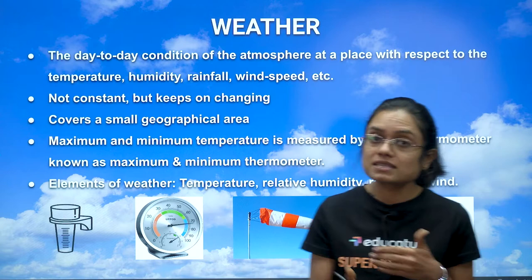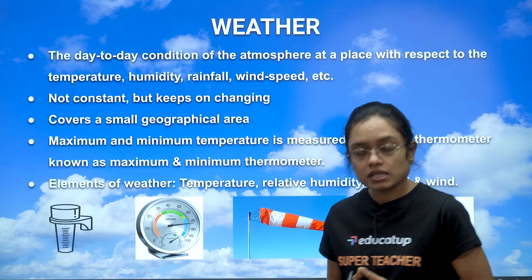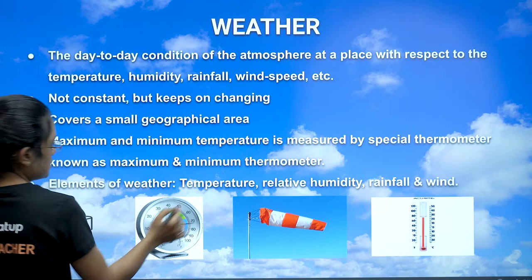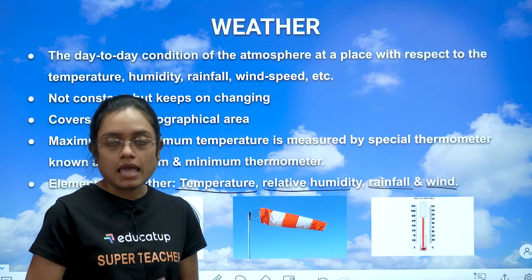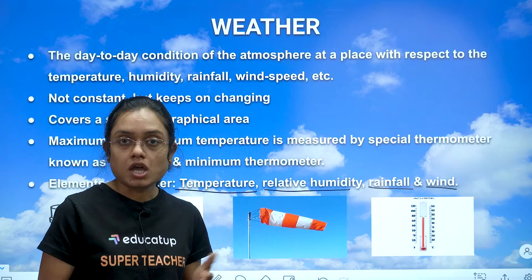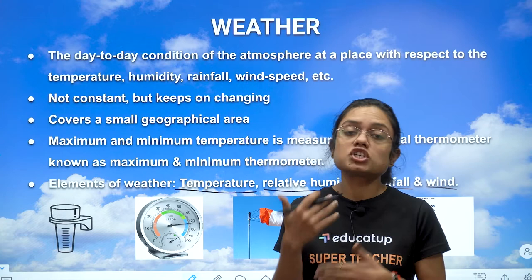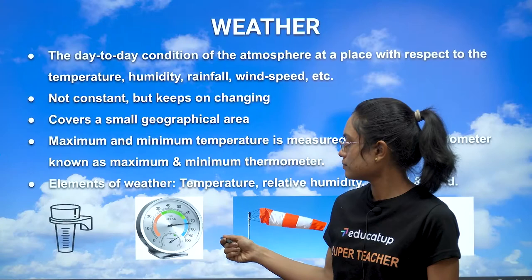Weather condition is identified with the help of maximum and minimum temperatures, measured using maximum and minimum thermometers. The four key elements of weather are: temperature, relative humidity, rainfall, and wind. These four parameters decide what kind of weather a place will have. Weather is an ongoing, ever-changing condition of the atmosphere.